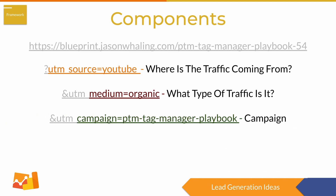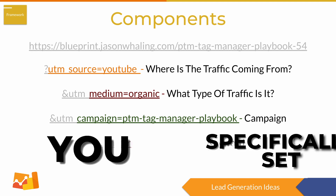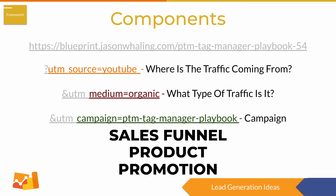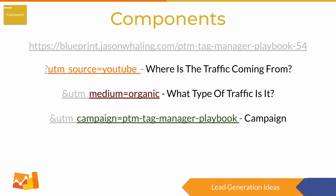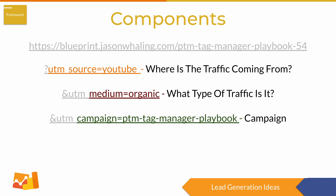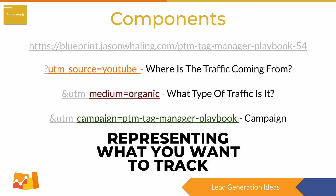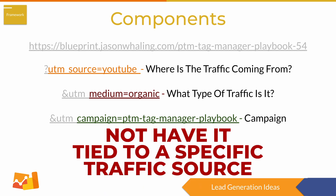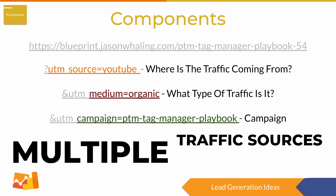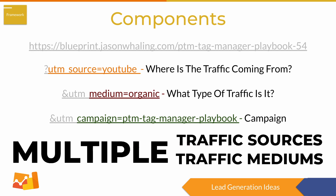Next, we have campaign, and this is going to be something that you specifically set yourself. So if you have a particular sales funnel, product, or promotion, this is typically where you're going to put that name. This name should be independent from where the traffic is coming from. You're going to want the campaign to represent something you want to track — you can have multiple traffic sources and mediums in the same campaign.